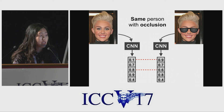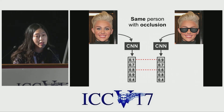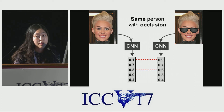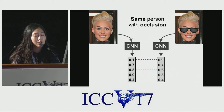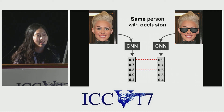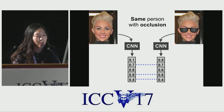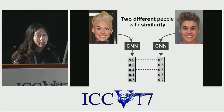For example, the inputs might be two pictures of the same person while one is with sunglasses. When verifying two faces, this kind of occlusion should not be considered at all. Instead, we should focus more on the feature dimensions that are similar to each other.